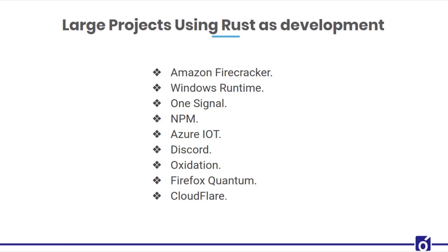Rust is an intriguing language. It closely resembles C++ in many ways, hitting all the right notes when it comes to compilation, runtime model, type system and deterministic finalization. While it has its own learning curve, it also has the potential to solve some of the most vexing issues that have plagued C++ projects.